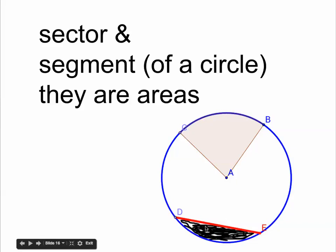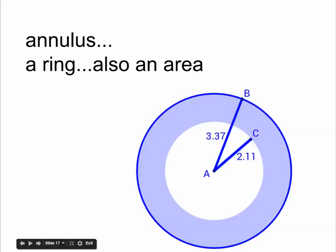And a segment of a circle. Segment is not just a line segment. Segments of lines and segments of circles. Segment of the circle is part of a circle, and here is part of the circle. It would be a shaded area between a chord and the circle. And then the area basically between two circles, that's called an annulus.